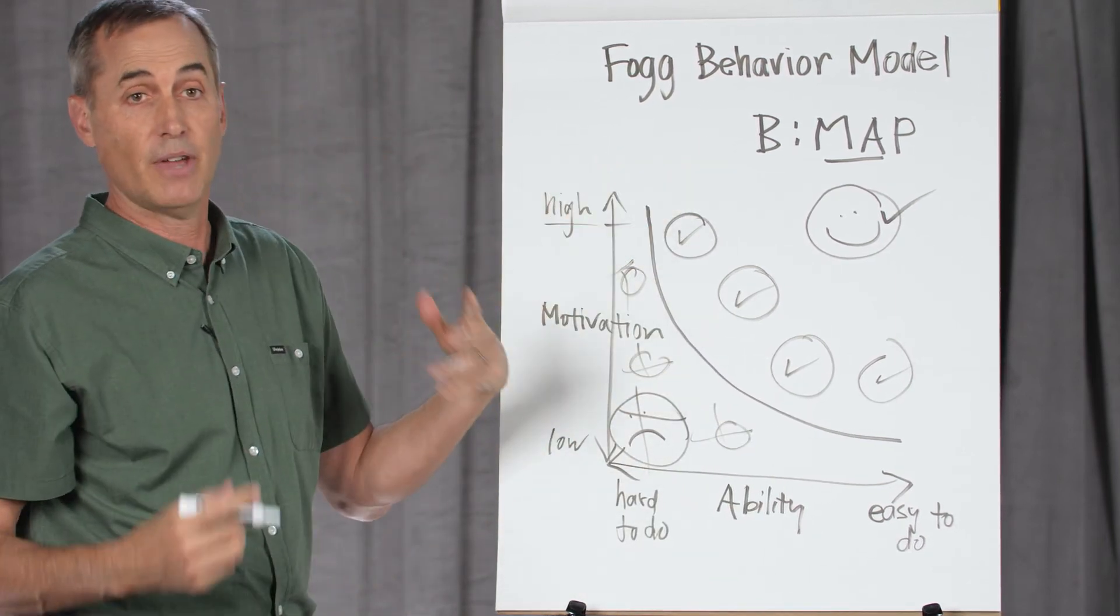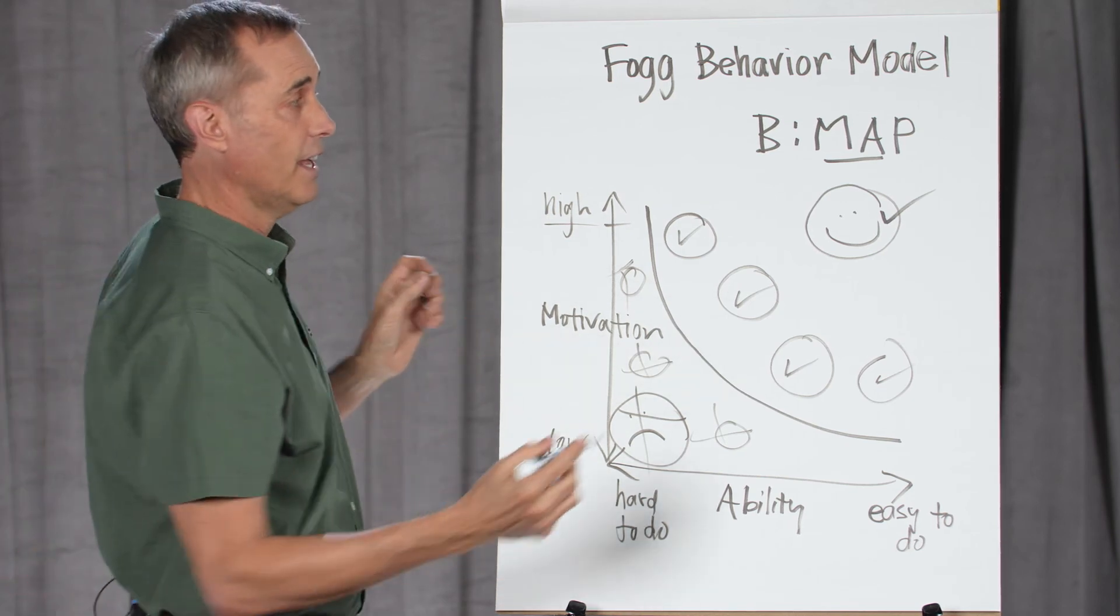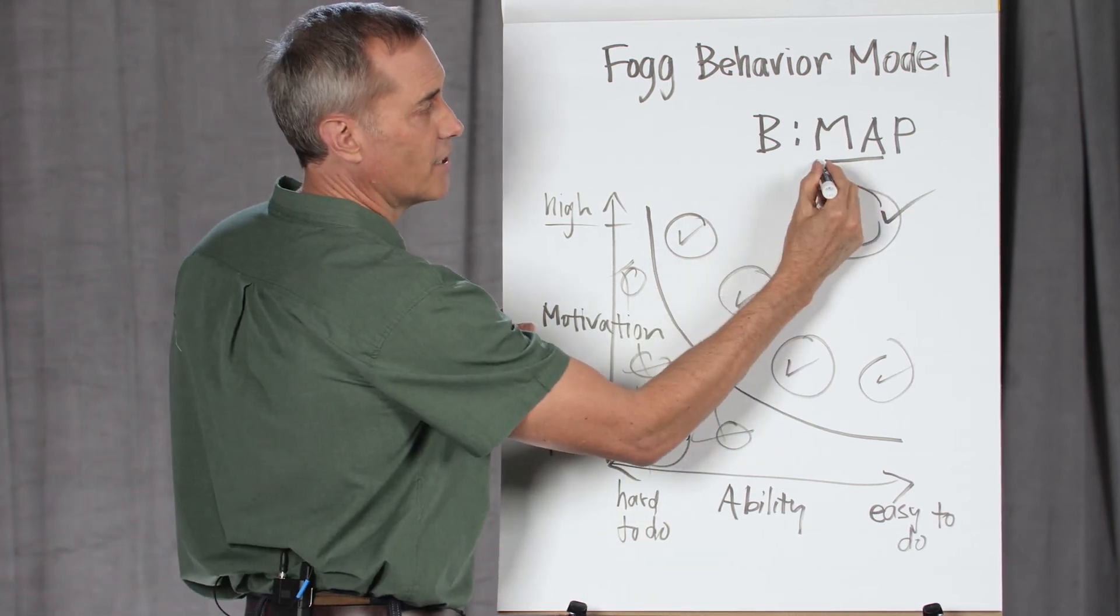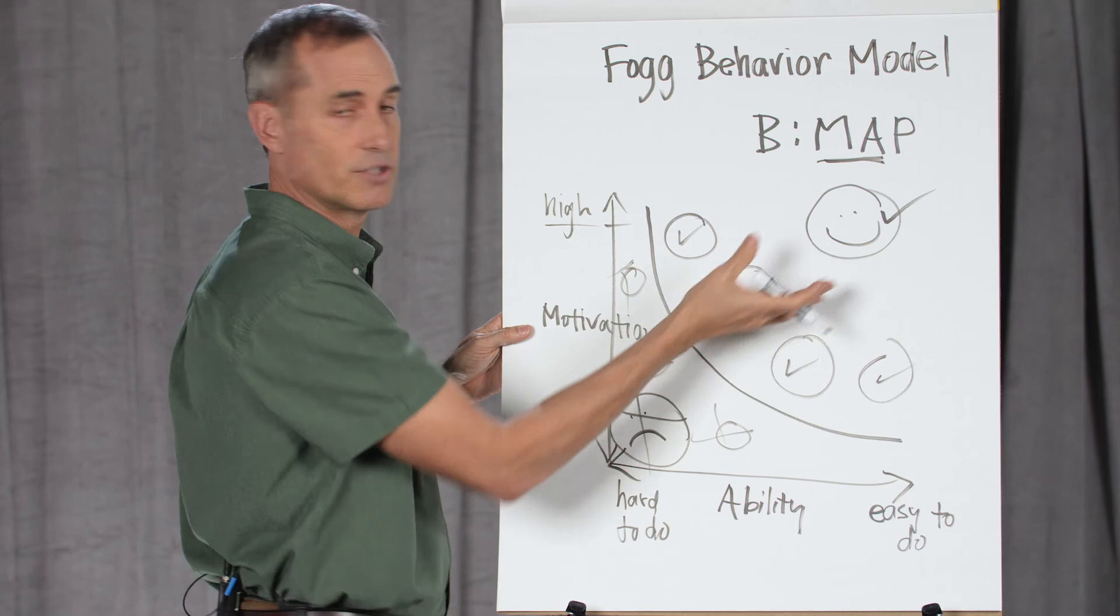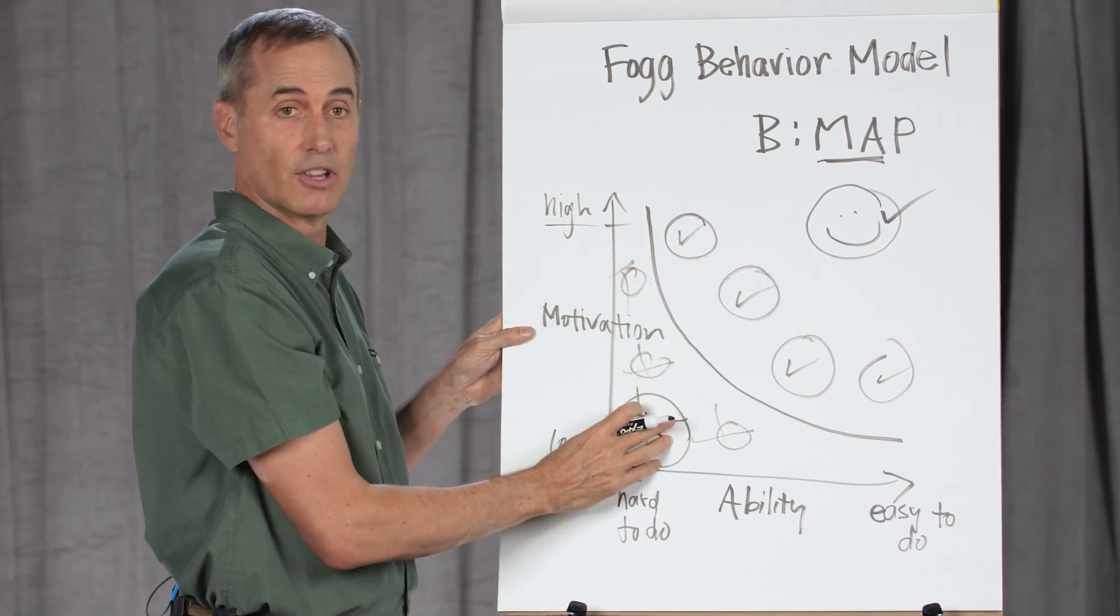So that's how behavior works in the behavior model. It's when somebody who has a combination of motivation and ability is prompted to do the behavior. If they're below the line, they don't.